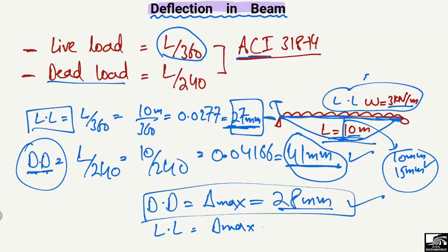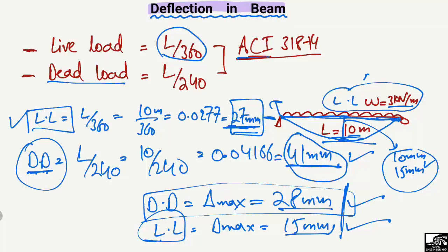For live load the limit is 27 millimeters, and if our calculated maximum live load deflection is 15 millimeters, that is also acceptable. Both values are within the limits: 27 millimeters for live load and 41 millimeters for dead load. Similarly, you can find the deflection limits for different codes.